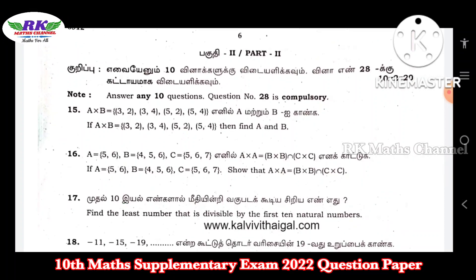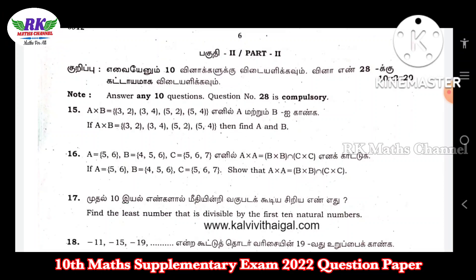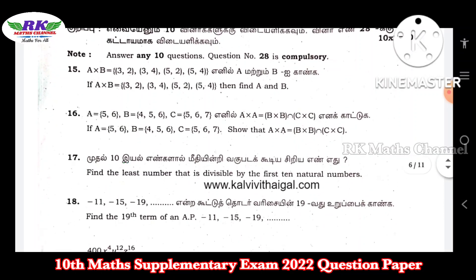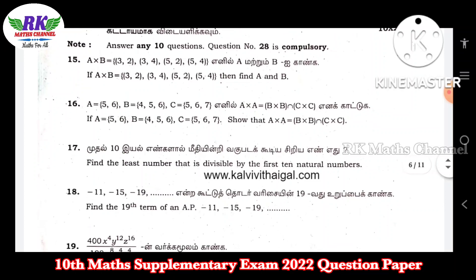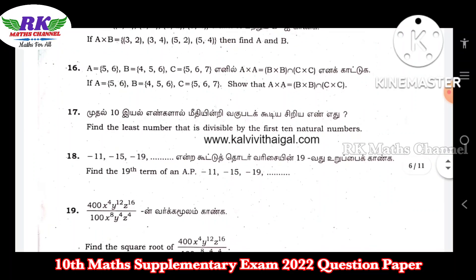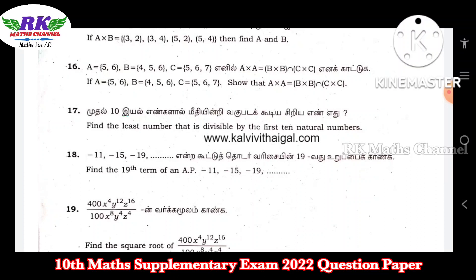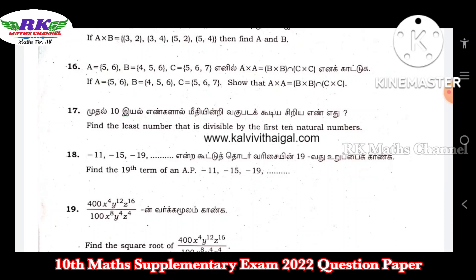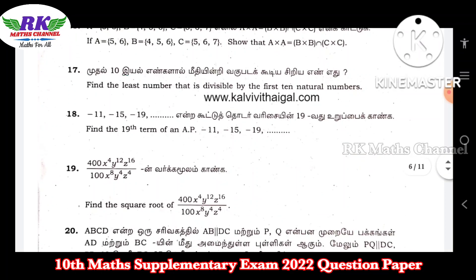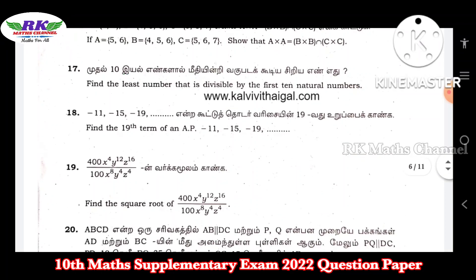So 2 marks, and 10 questions — then question number 28, and there are compulsory questions. The 2 marks section has sets A, B, and C — there are three sets. That means LHS equal to RHS. Next, question number 17: find the least number that is divisible by the first 10 natural numbers.